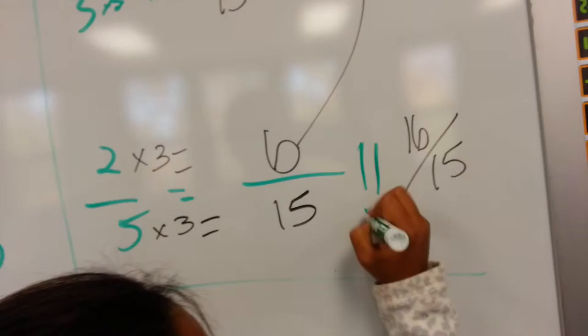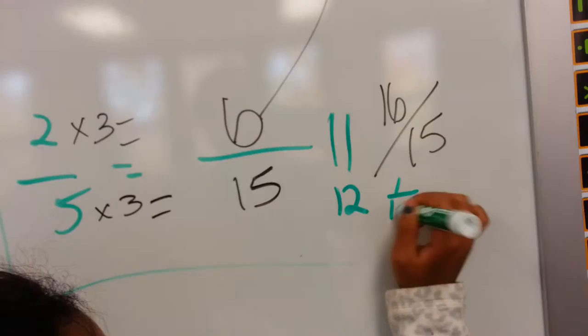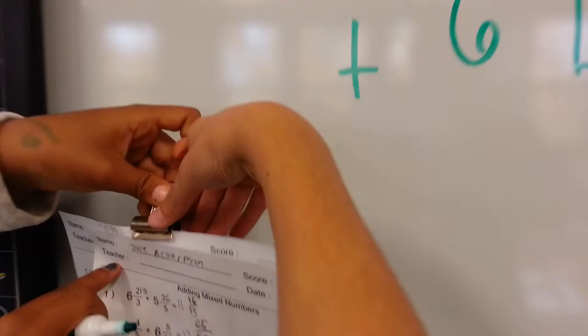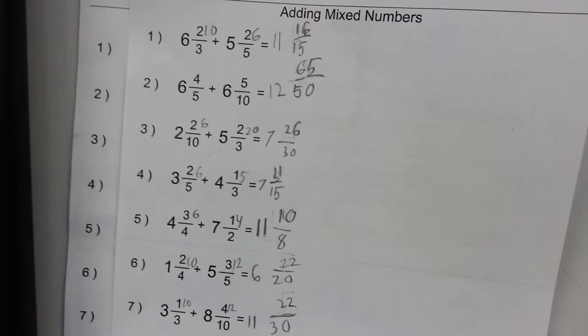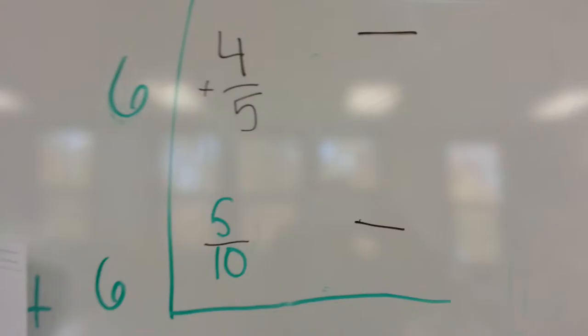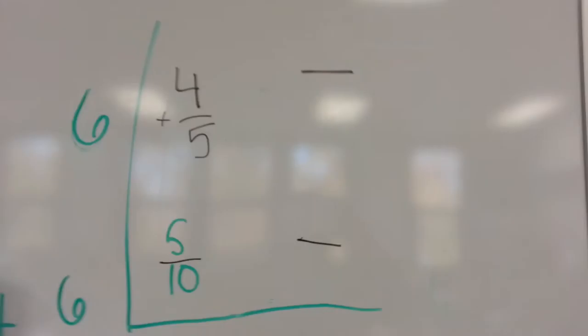Now add that one to this eleven and you keep the one-fifteenth. Yeah, so you just did it. Okay, what are you doing, Jace? I'm going to be adding number two. Okay, read the problem, Max. Number two, read the problem. Alright, six and four-fifths plus six and five-tenths.